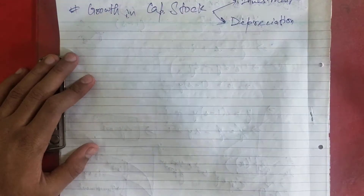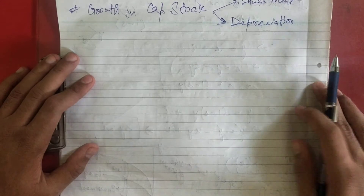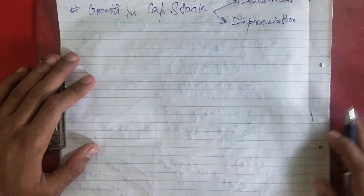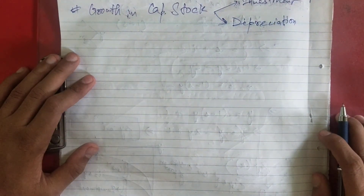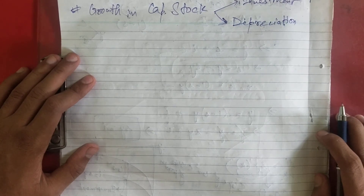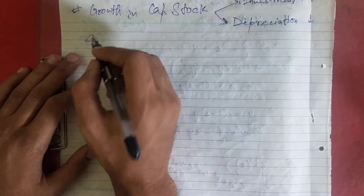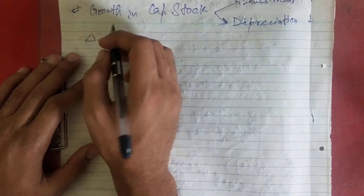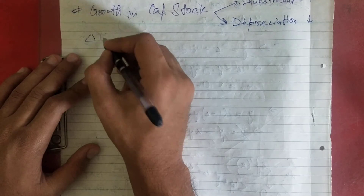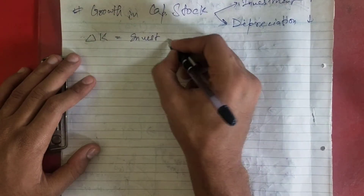Investment refers to any expenditure on new plants and equipment, and it causes capital stock to rise. Depreciation refers to the wearing out of old capital, causing capital stock to decrease. Therefore, the change in capital stock is: delta K = Investment minus Depreciation.